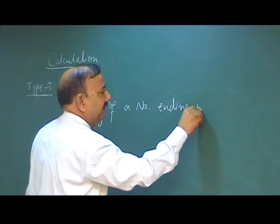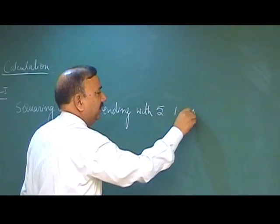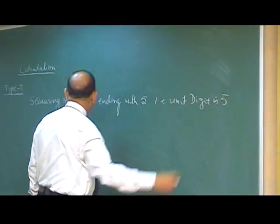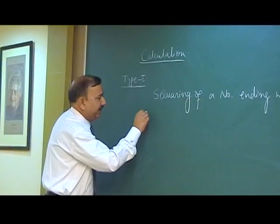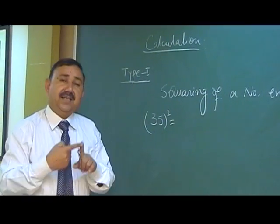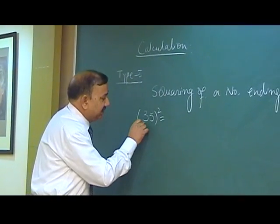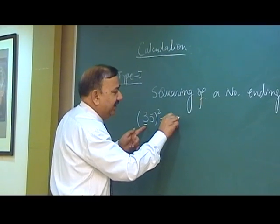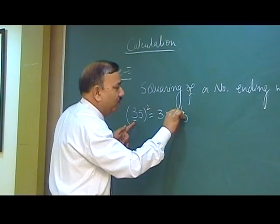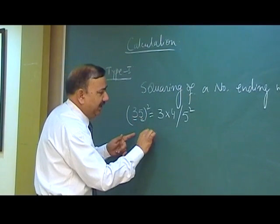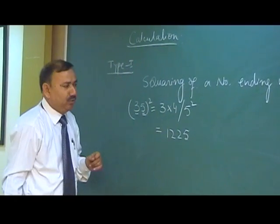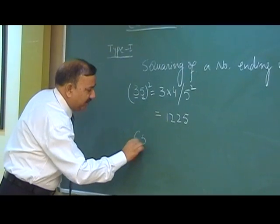The unit digit is 5. Suppose we want to square 35. We can quickly tell the answer of 35 squared. We take the leading digit, which is 3, multiply it by the next succeeding number, which is 4, and at the end we write the square of 5, which is 25. So the answer is 1225. That is 35 squared equals 1225.